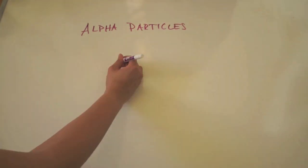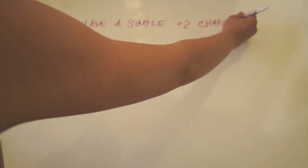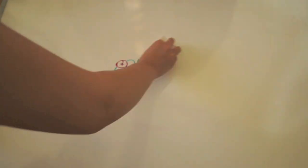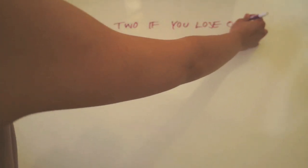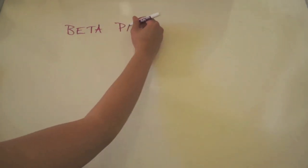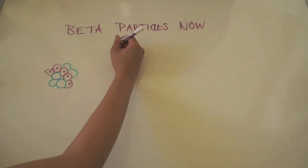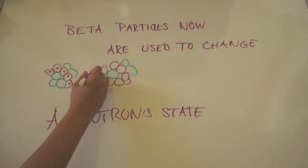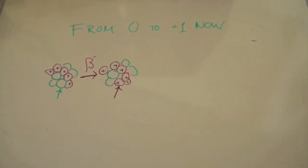Alpha particles have a simple plus two charge, two protons and two neutrons. Fall two if you lose one. Beta particles now are used to change a neutron state from zero to plus one now.